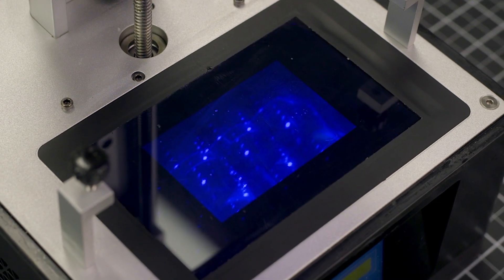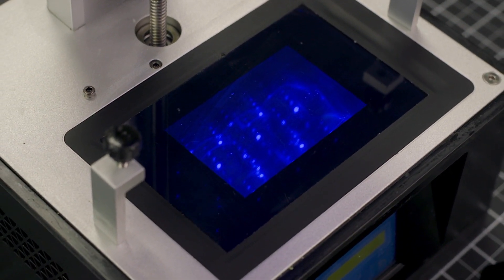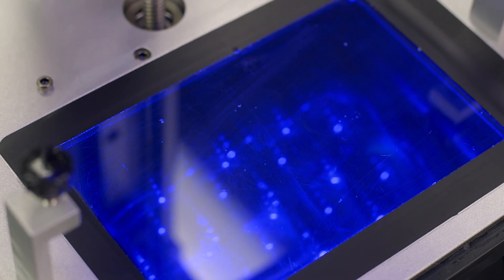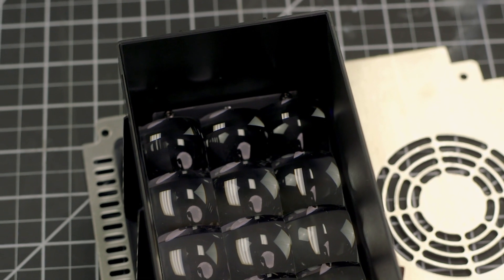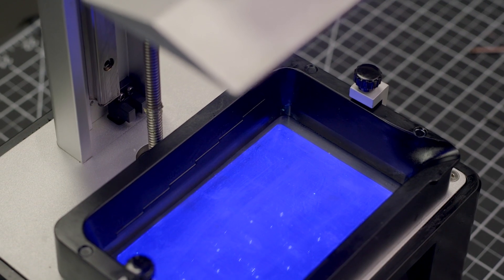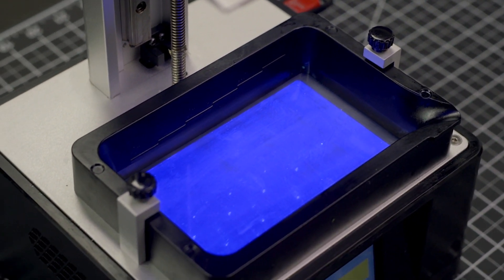The Mono improves on the functionality by moving away from a traditional RGB LCD to a 2K monochrome LCD, to allow more UV light through to cure each layer faster than ever. Even further, the UV LEDs in the base have been improved to form a matrix of LEDs to fully expose the entire build area, preventing hot and cold spots where light intensity may vary.